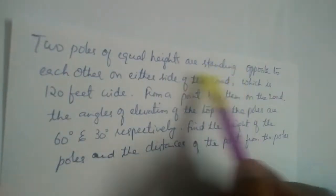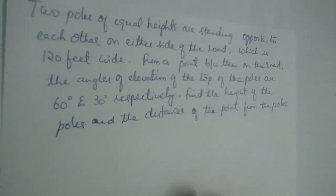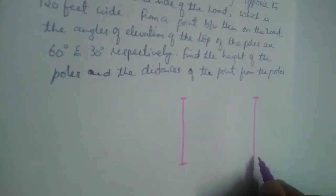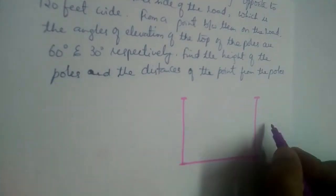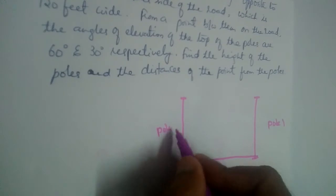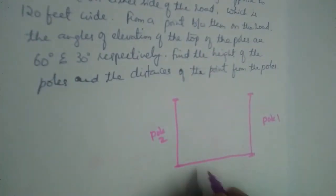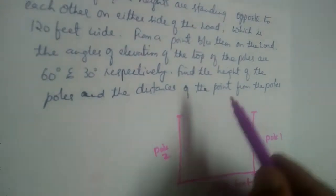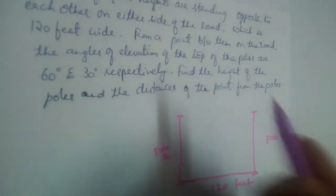Two poles of equal heights are standing opposite to each other on either side of the road. Let us draw two poles of equal heights. This is the road. This is pole 1 and this is pole 2 on either side of the road, which is 120 feet wide. From a point between them on the road, the angles of elevations of the top of the poles are 60 and 30 degrees respectively.